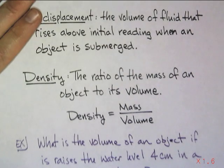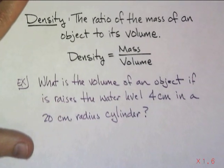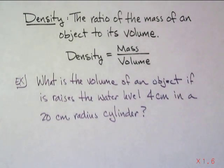So here's an example problem: What is the volume of an object if it raises the water level 4 centimeters in a 20 centimeter radius cylinder? Okay, notice I don't tell you how much the water started out with, because that doesn't matter. It raises the water level 4 centimeters. That's what's important. That's how much fluid has been displaced.